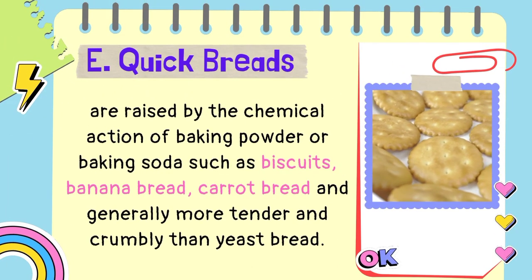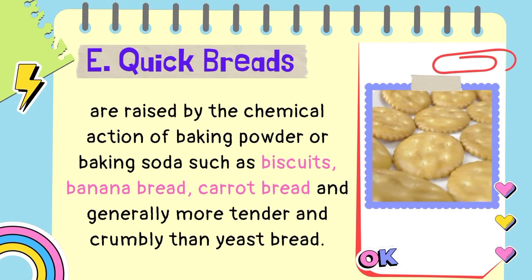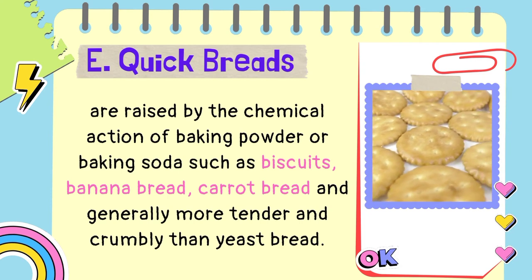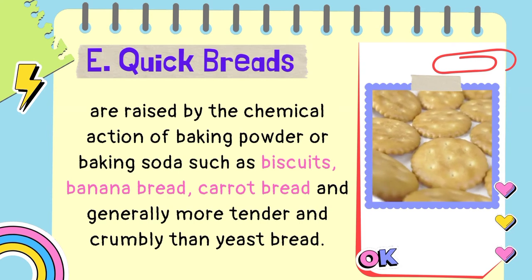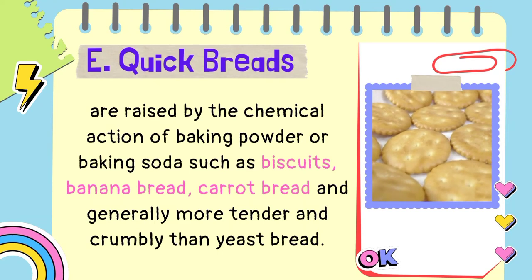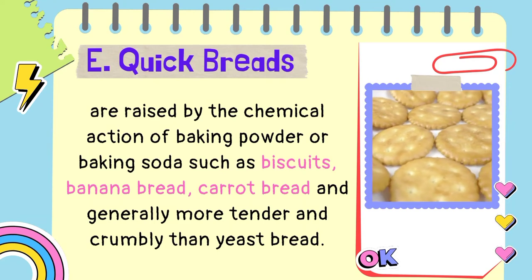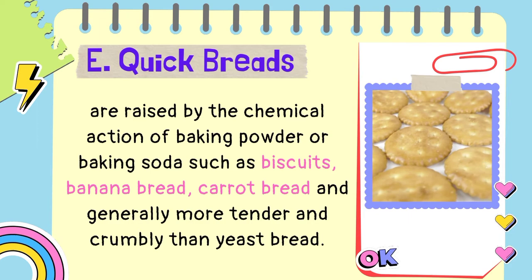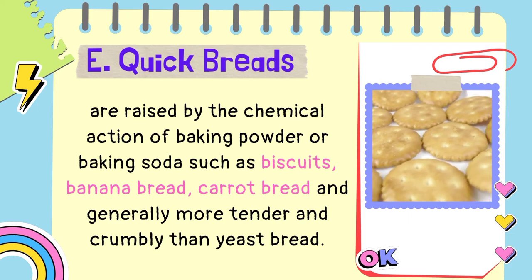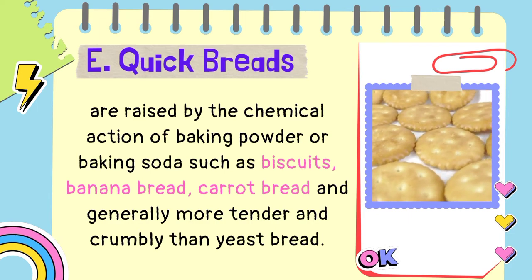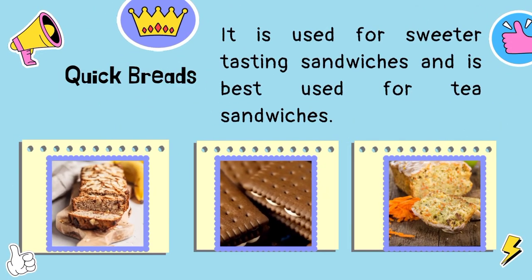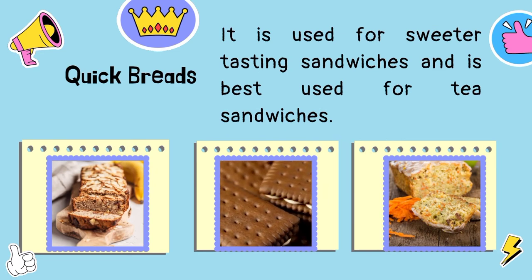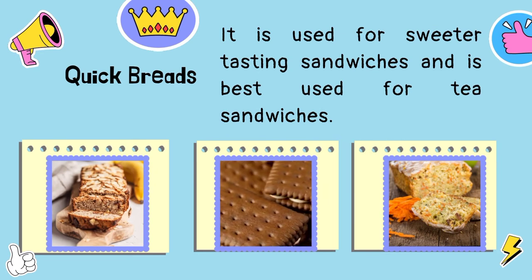E. Quick breads are raised by the chemical action of baking powder or baking soda, such as biscuits, banana bread, carrot bread, and are generally more tender and crumbly than yeast bread. They are used for sweeter-tasting sandwiches and are best used for tea sandwiches.